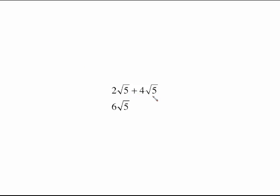These are like radicals just like 2a and 4a are like terms and we're allowed to add those together and get 6a. When you have like radicals you just deal with the coefficients, you add those together, and your radical stays the same.